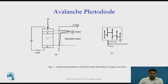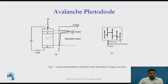In the diagram you can see the primary generated electron colliding with an electron in the valence band and generating a new electron-hole pair. This impact ionization process keeps repeating, creating an avalanche effect that generates more and more electron-hole pairs, resulting in multiplication of the photocurrent.